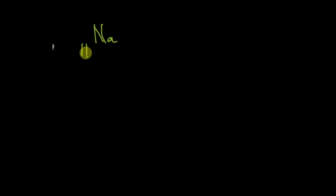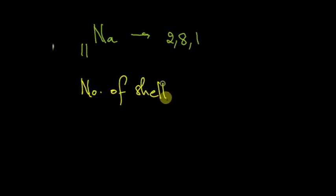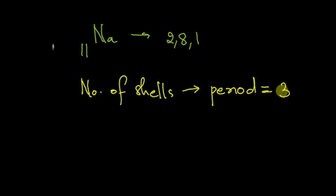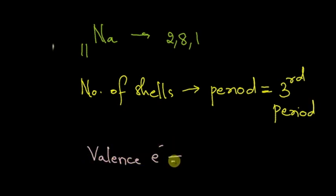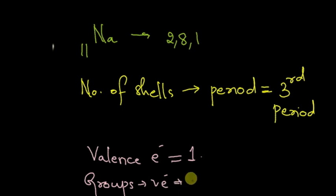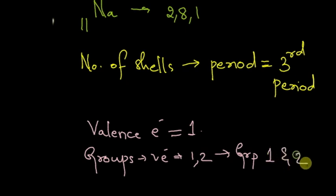Let us take the example of sodium with atomic number 11 and the electronic configuration 2, 8, 1. We know that the number of shells tells us the period. Here we have three shells, so this element would belong to the third period. The number of valence electrons is equal to 1. When the number of valence electrons is 1 or 2, it corresponds to group 1 and 2 respectively.